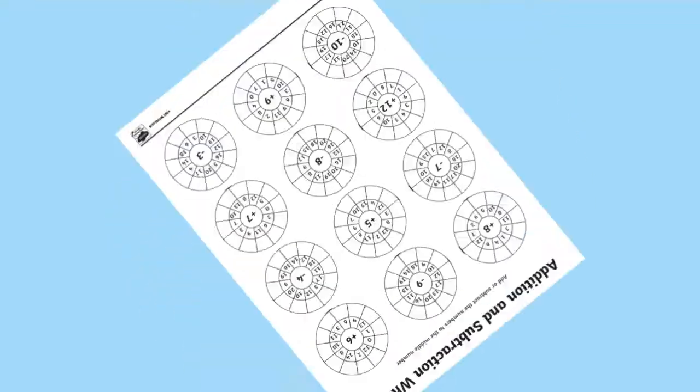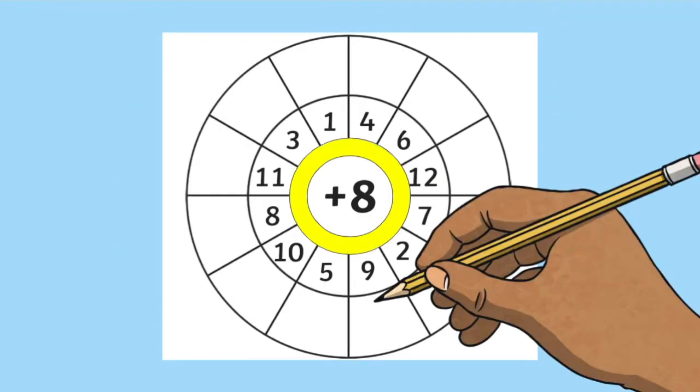To complete the activity your children simply have to add or subtract the number in the centre from the numbers in the middle circle. They can then write the answer in the outer blank spaces.